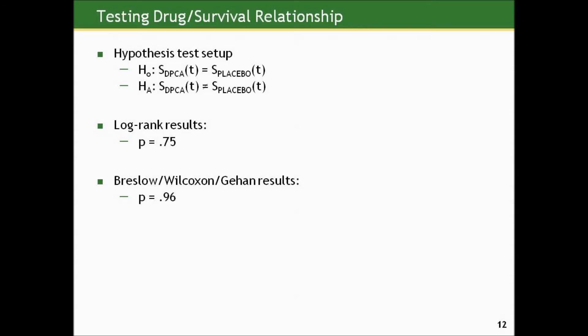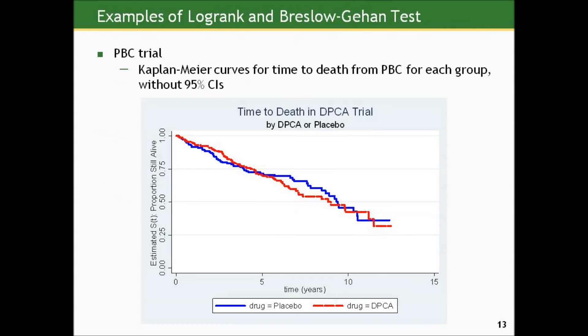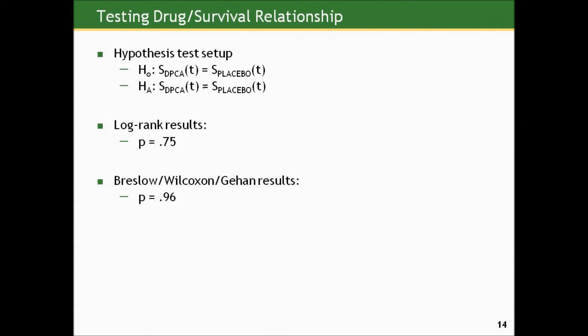Neither one is statistically significant by a landslide using 0.05 as our cutoff. The reason the log-rank is slightly lower is that it picks up on the fact that, looking back at the Kaplan-Meier, towards the end of the time period the curves diverged the most, and log-rank is a little more sensitive to later differences. Nevertheless, there's no evidence from this data of the efficacy or superiority of D-PICA in preventing death or prolonging life for patients with primary biliary cirrhosis.